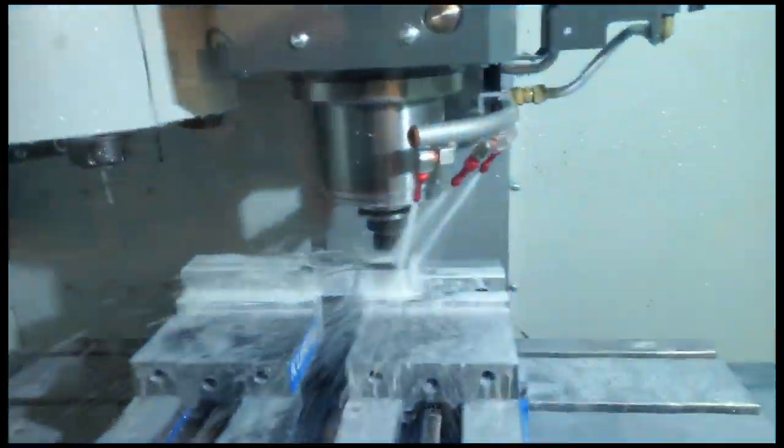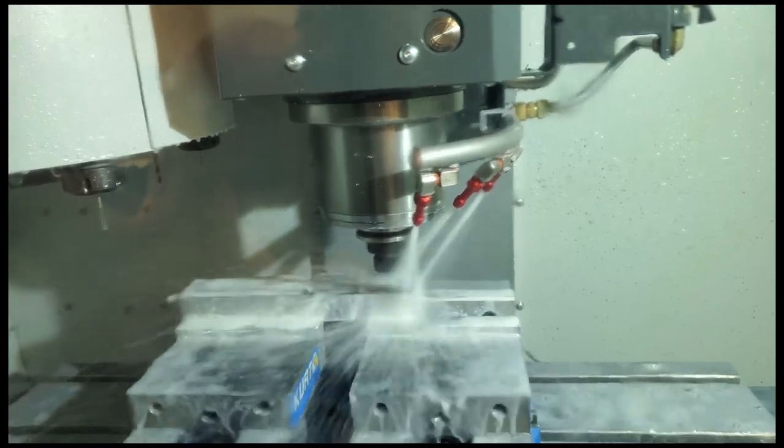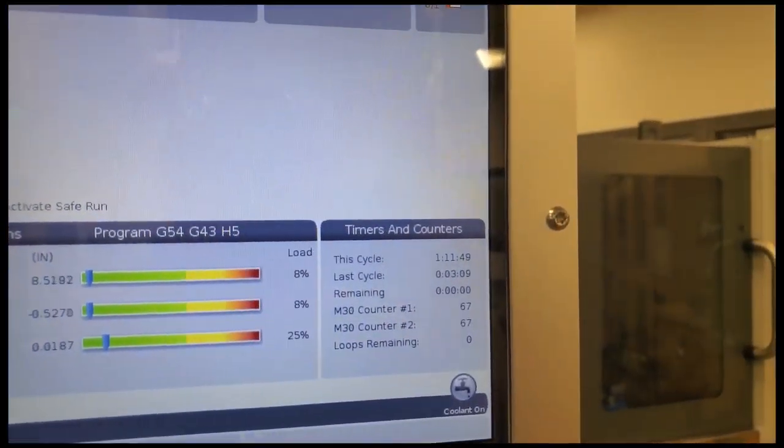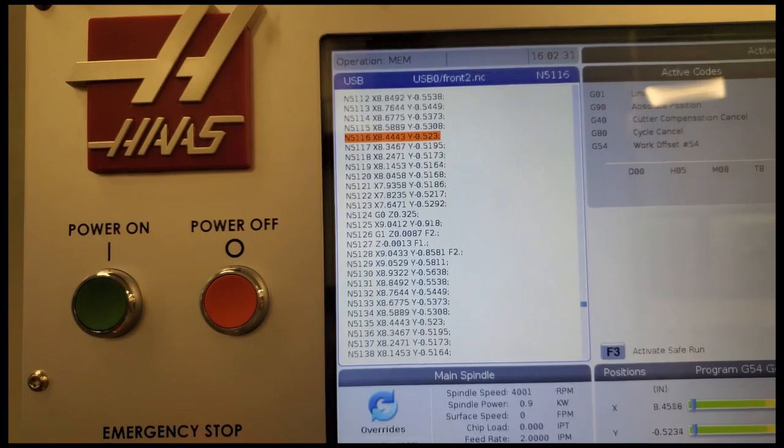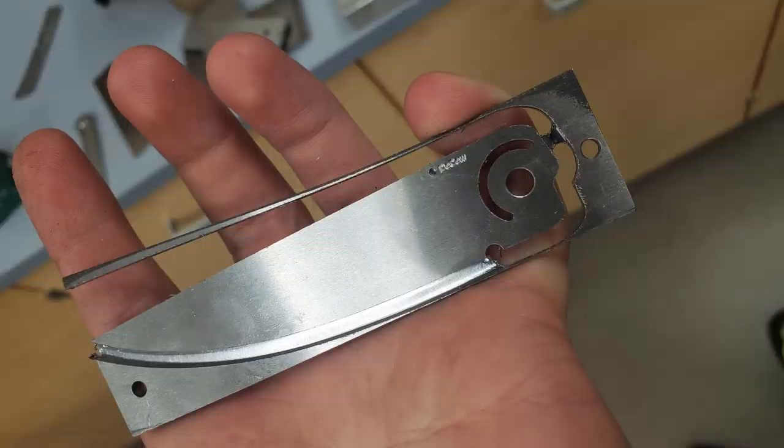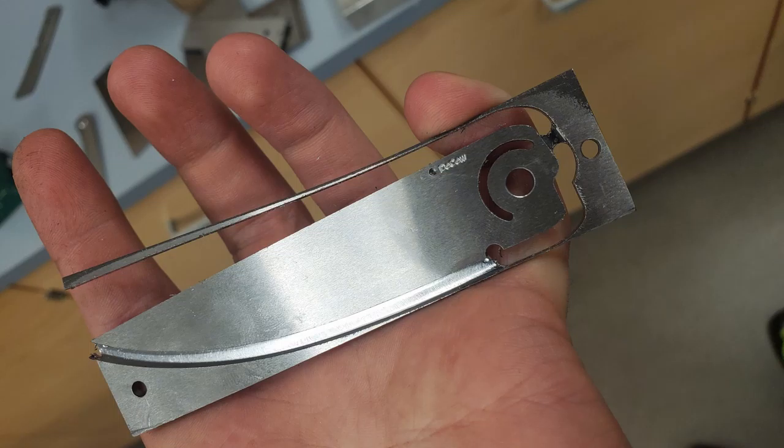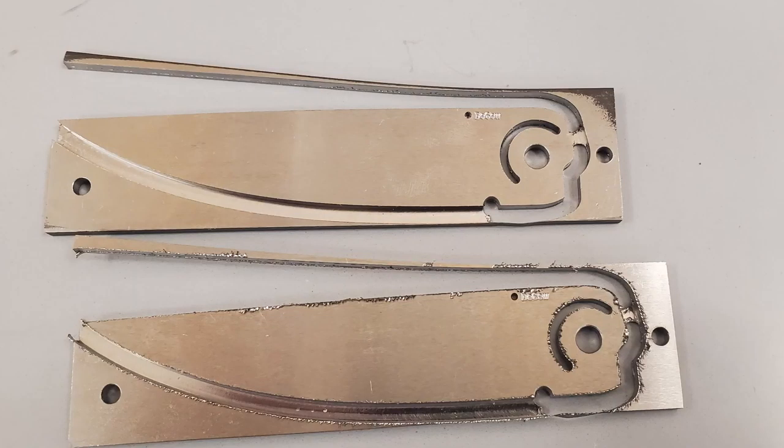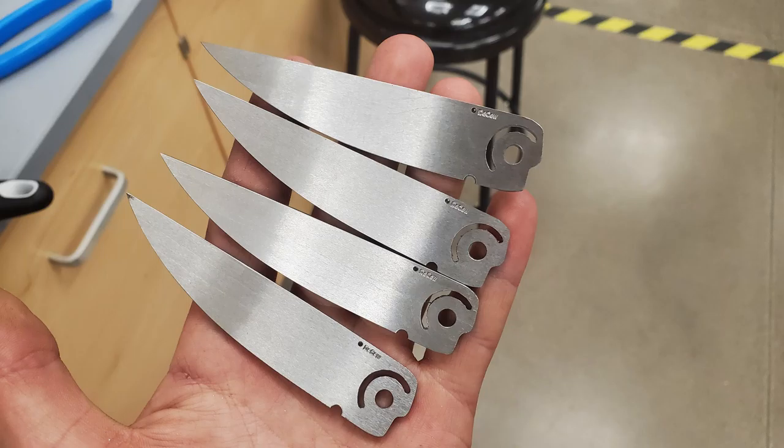Here's what the blades looked like once I took them off the machine. From here on everything's just hand work: fitting the lock bar and stop pin and stuff, and then grinding the bevels and polishing. It's all by hand. There you can see I just removed the scrap material and deburred them with a file.